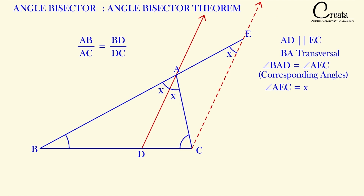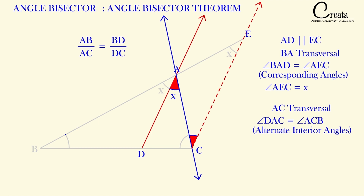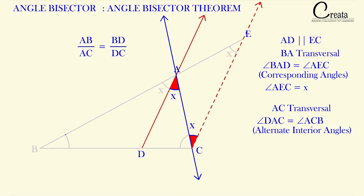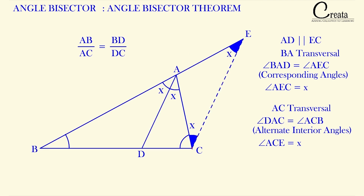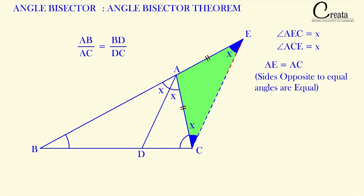Again taking the two parallel lines AD and EC with AC as the transversal, angle DAC (which is x) equals angle ACE because these are alternate interior angles, and alternate interior angles are equal when a transversal cuts parallel lines. So angle ACE is also equal to x. In triangle ACE, angles at C and E are both equal to x. By the property that sides opposite to equal angles in a triangle are equal, AE equals AC.